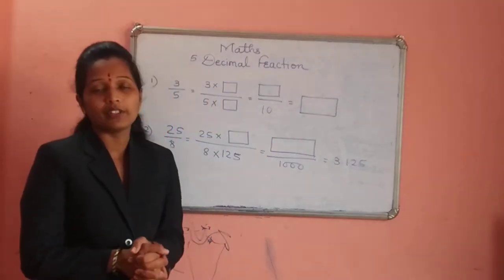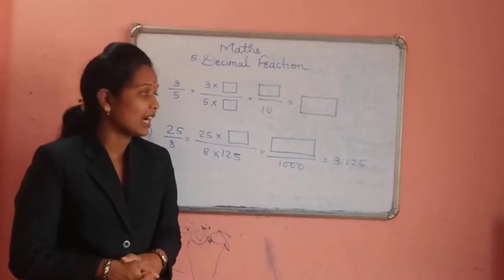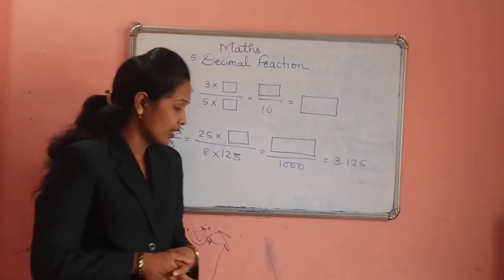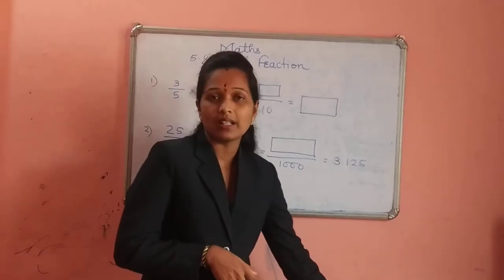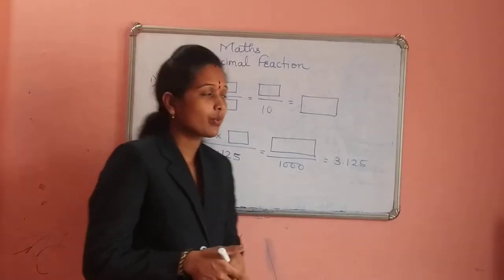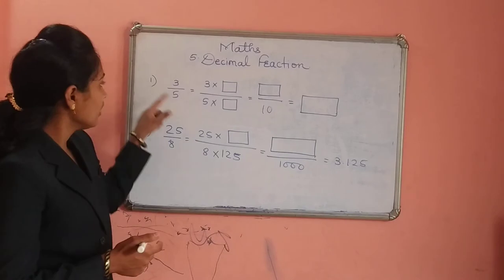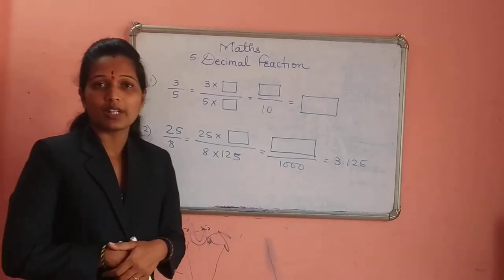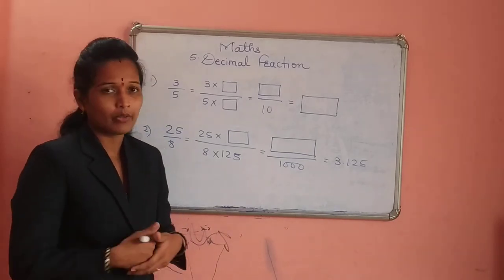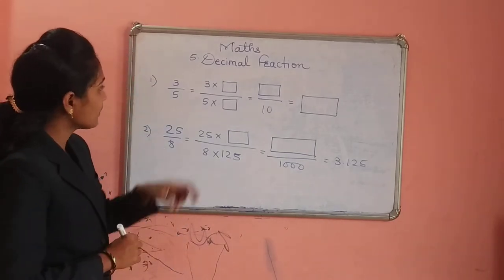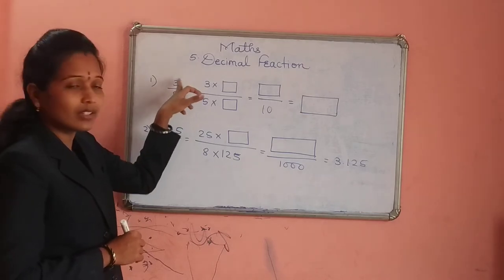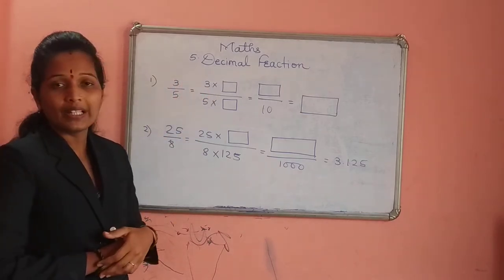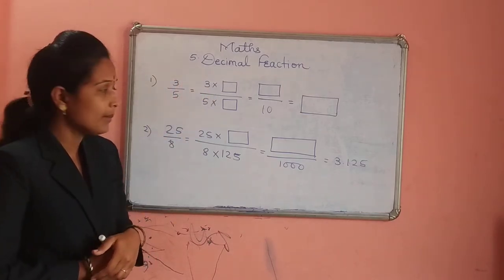So today we have to start Practice Set 15. If you observe, question number 1 is there. The first and second examples I am going to take; the next examples you have to solve yourself. The fraction given is 3 upon 5, and we have to fill the blanks only.